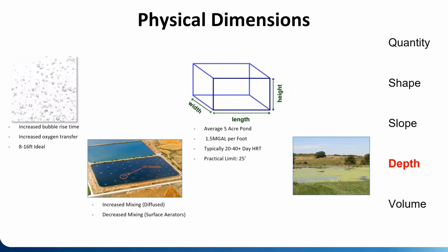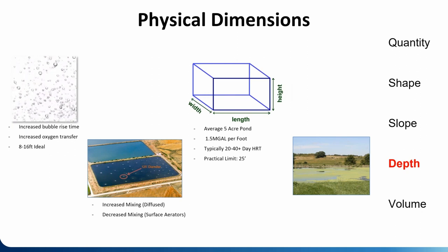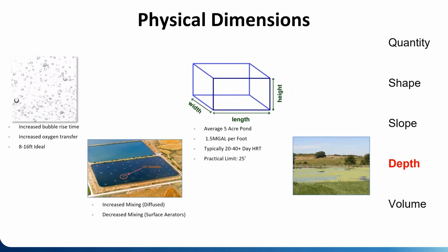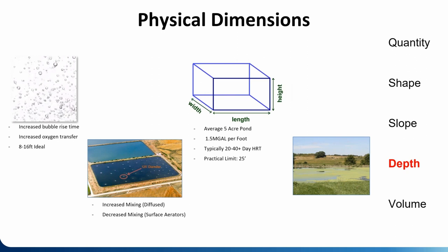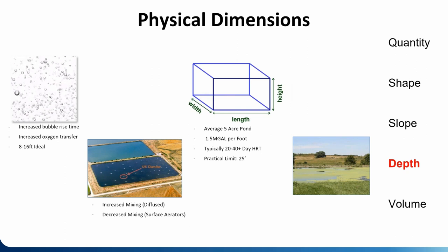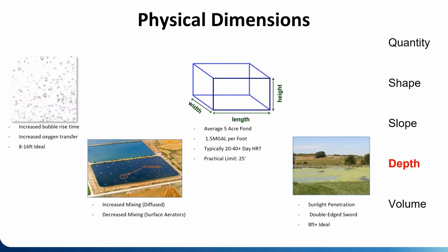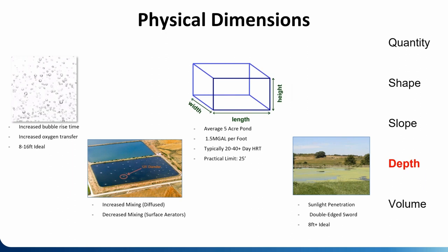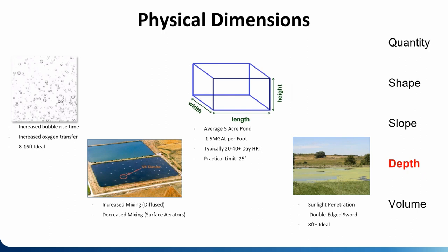Depth is also a huge component of volume — it's one of the three things you multiply together to get volume. For an average five-acre pond, every foot of depth adds about 1.5 million gallons of water. Most lagoons are in the 8 to 18 or 20 foot range. Depth also controls sunlight penetration — sunlight starts tapering off around 5 to 8 feet deep and beyond that point won't penetrate much. Algae produces oxygen during the day but sucks it out at night, so we generally prefer deeper lagoons to minimize sunlight penetration and the associated algae issues.